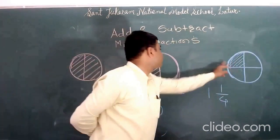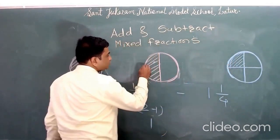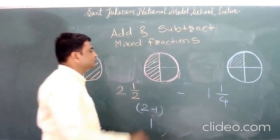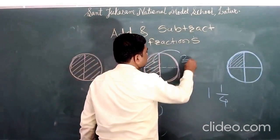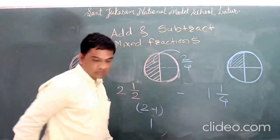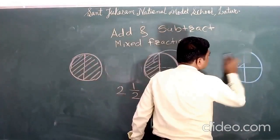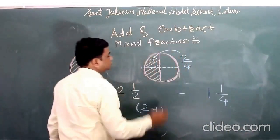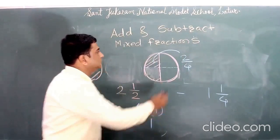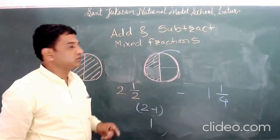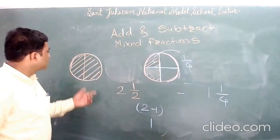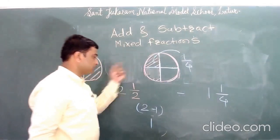Now what remains is to subtract one-fourth from one-half. For that, we divide this circle into four equal parts. The half becomes two parts out of four, and we want to remove one part out of four. So we remove one-fourth part, and what remains is one-fourth part of the circle.